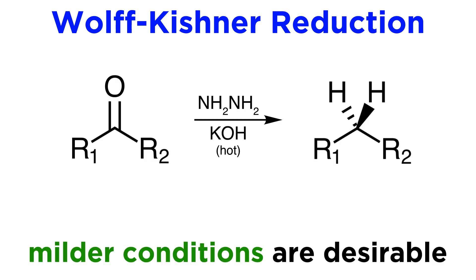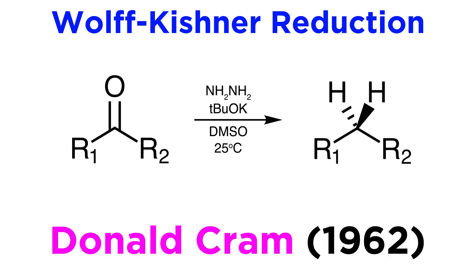Given the drastic conditions used in the original Wolf-Kishner protocol, it is not surprising that many workers have endeavored to develop milder conditions, and this has given rise to a host of modifications of the reaction. A complete survey of all the methods inspired by Wolf and Kirchner's original work is beyond the scope of this tutorial. However, just to give you a flavor of where modern synthesis can lead, let's mention the improvement made in 1962 by American chemist Donald Cram, Nobel Prize winner for his work in supramolecular chemistry. His group found that if you use potassium tert-butoxide as a base and dimethyl sulfoxide as the solvent, these are exceptionally basic conditions and the reaction can then be run at room temperature.